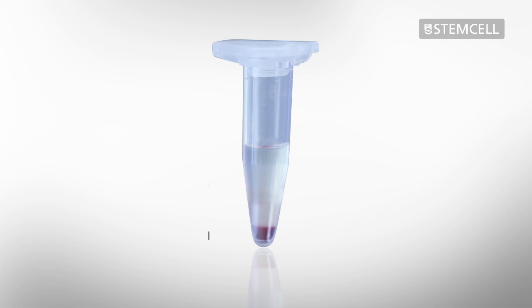After the incubation, the sample will be separated into two layers. The red blood cell pellet will be clearly visible at the bottom of the tube. The size of the RBC pellet can vary depending on the hematocrit of the blood sample.